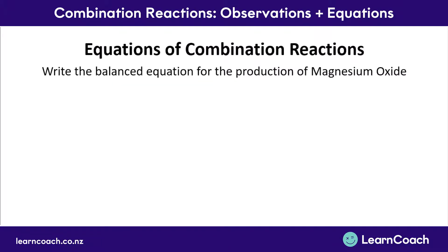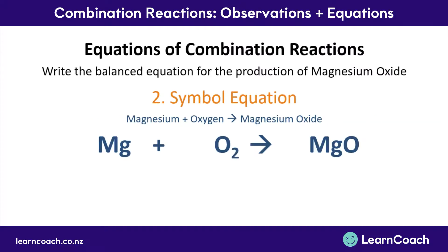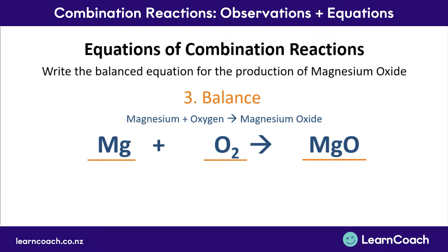To explain equations for combination reactions, we'll look at the production of magnesium oxide. The word equation is: magnesium plus oxygen produces magnesium oxide. For the symbol equation, magnesium is Mg and oxygen is O₂ — a molecule of two oxygen atoms. Magnesium oxide is MgO, a compound of one magnesium atom and one oxygen atom. We now need to balance this equation so that the number of atoms of each element is the same on both sides — the reactant side and the product side.